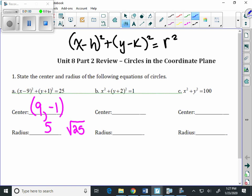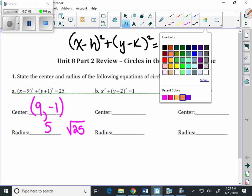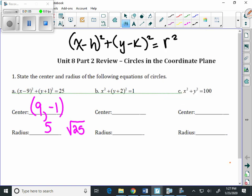When we look at letter b, same idea here. But what you might want to do on this particular problem, if you don't like it written in this form, is you could rewrite it as (x minus 0) squared plus (y plus 2) squared equals 1.